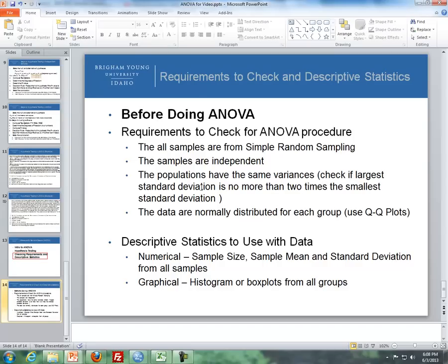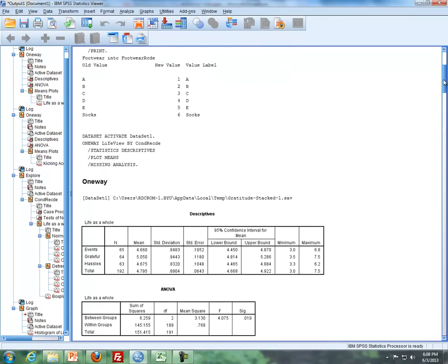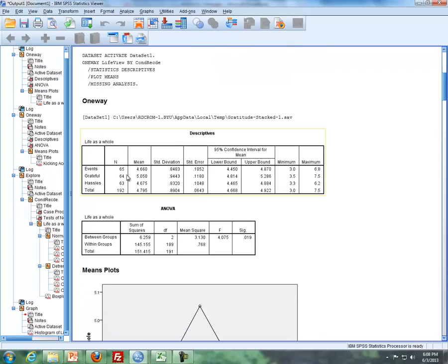First of all, the populations have the same variance. And how we check that, we check that the largest standard deviation is no more than two times the smallest standard deviation. And then finally, the other requirement is that the data are normally distributed for each group, using QQ plots. Okay, so here, I have some output here that shows us the standard deviations for each of the three different groups with the grateful study: the events group, the grateful group, and the hassles group. And here are my standard deviations. My larger standard deviation is this one, and my smallest is this one. And so what we can do is, so long as this standard deviation is no more than two times this, and you can eyeball it, and it looks like that is the case, we can assume equal variances.